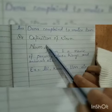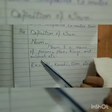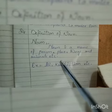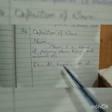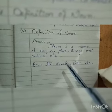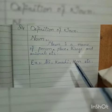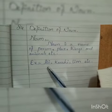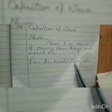Now we are going to learn about the definition of noun. Noun kya hai? Noun is a name of a person, place, things, and animals etc. Kishi bhi shaks ka naam ya jaga ka, kishi bhi chiz ka ya janveron ka kehlata hai noun. For example: Ali, Karachi, loin, etc.